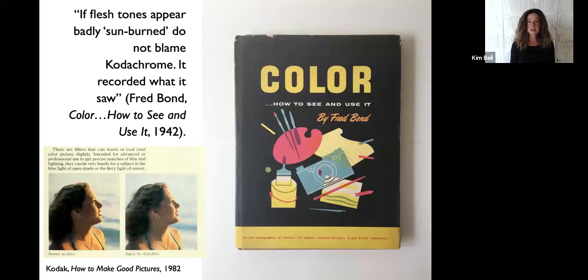Some guidebooks allowed that this warm color could be a positive feature when representing landscapes, but they also cautioned that it was totally unsuitable for portraits. One author explained, just before sunset, the color of the light is markedly red. It's only natural that pictures made at that time sometimes appear abnormally colored. Avoid this difficulty by making your pictures of people earlier than two hours before sunset. While it was easy in the early years of Kodachrome to blame the difficulty on film's tendency to exaggerate saturated colors, the problem wasn't a wholly technical one, as a few books recognized. The how-to author Fred Bond wrote of photographing during the forbidden hours, quote, if flesh tones appear badly sunburned, do not blame Kodachrome, it recorded what it saw.